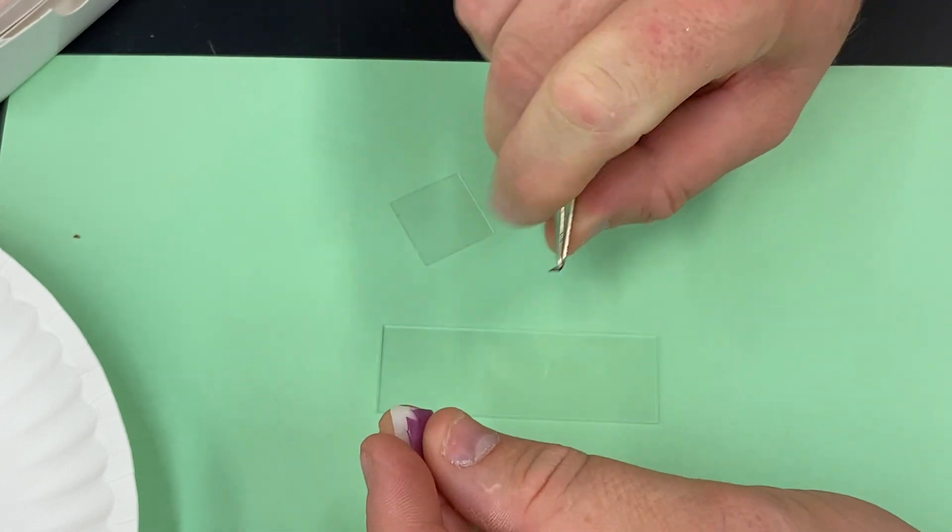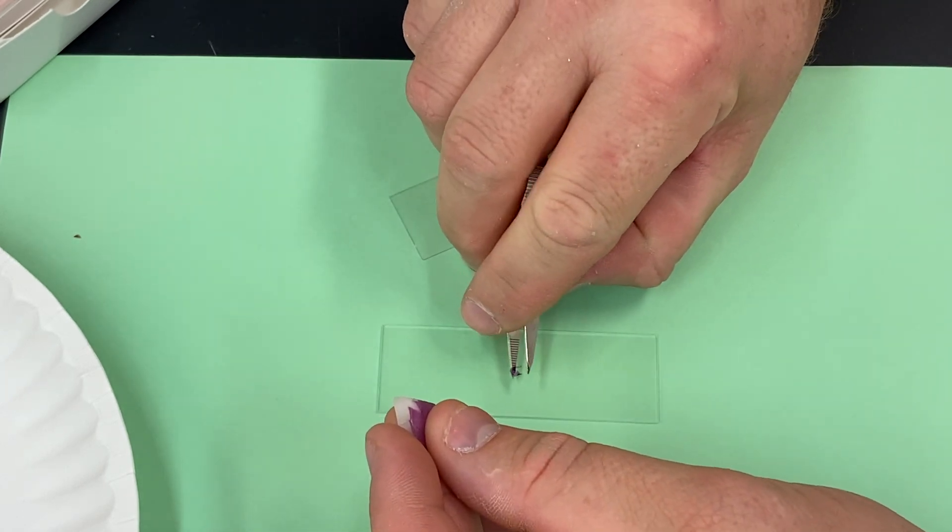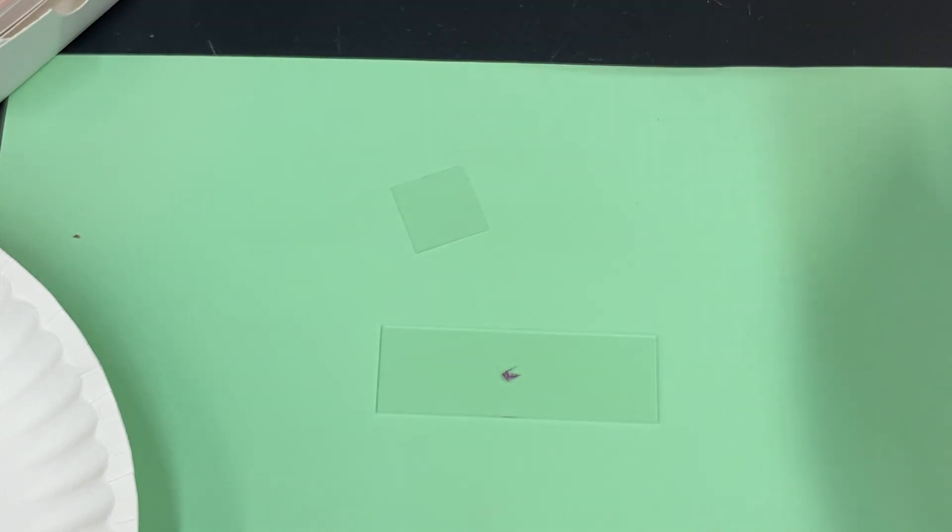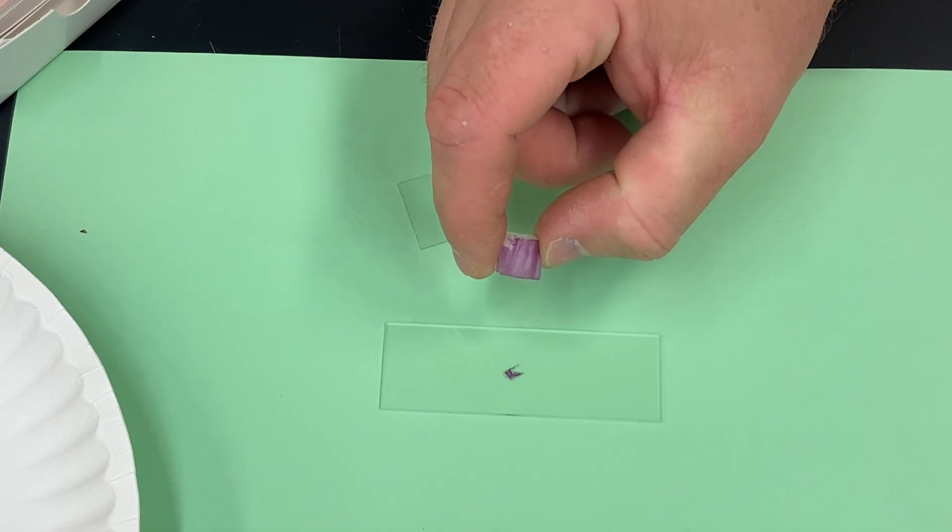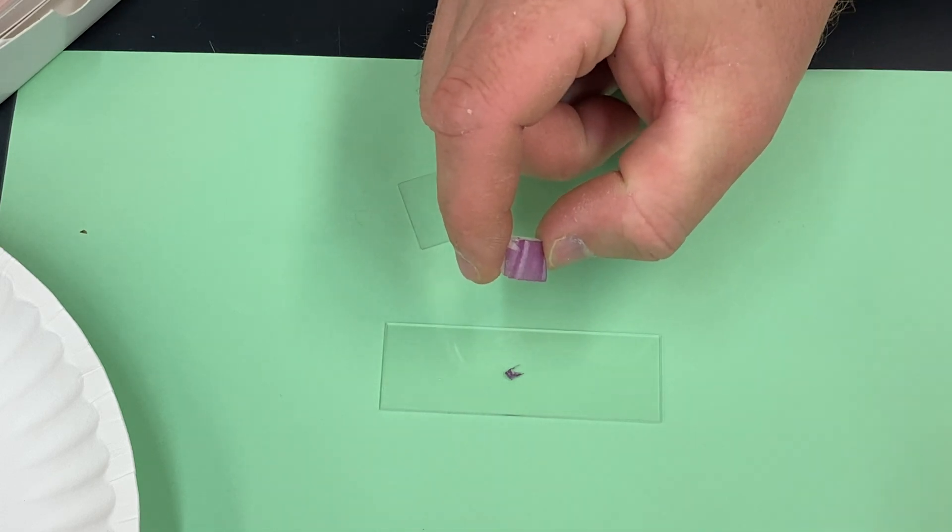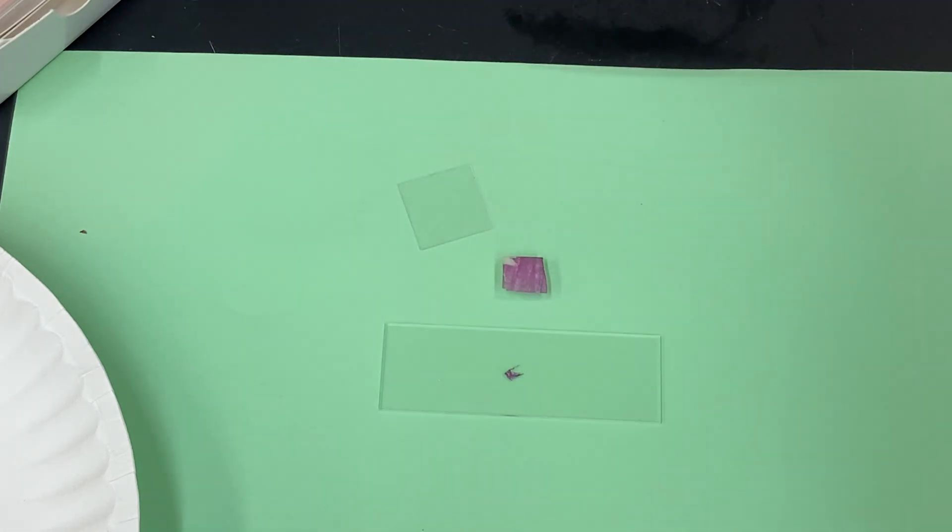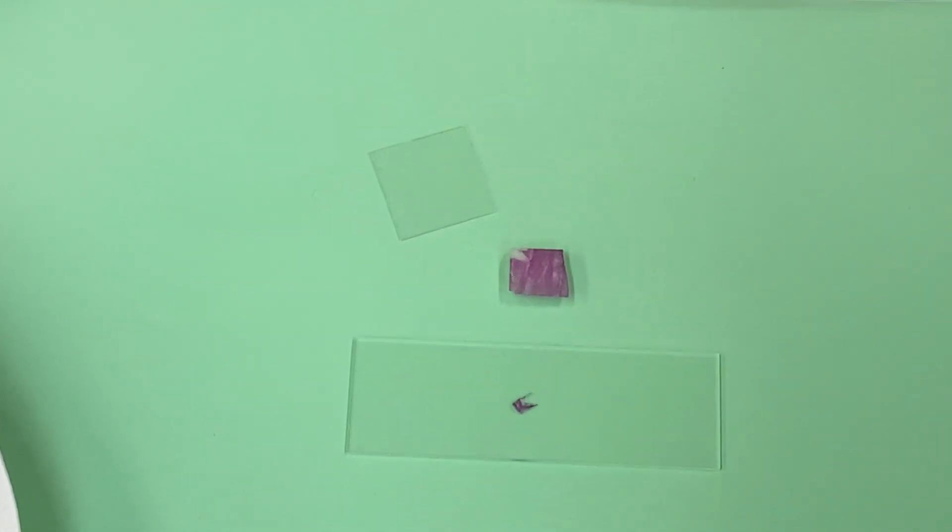This one was not that bad, and you just want a tiny, tiny little piece just about like that. Just put that right on your slide. Now the nice part about this and the reason we use it for this lab is it is essentially pre-stained. We don't have to add any staining to it that's going to screw up any of our chemical results.